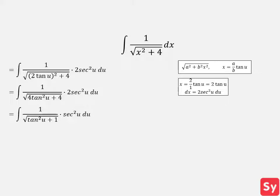Now we can see that we can pull out a square root of 4, which will cancel out the 2 in the numerator. This leaves us with 1 over the square root of tangent squared u plus 1 times secant squared u. Let's recall a trig identity.